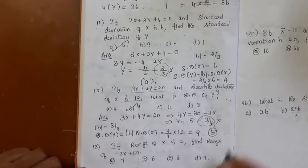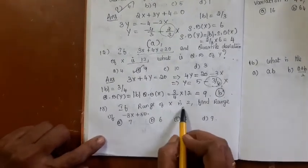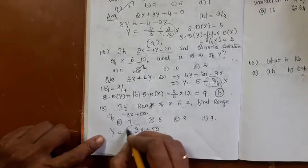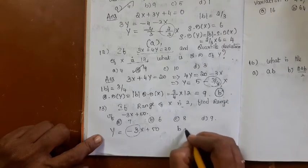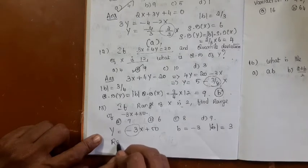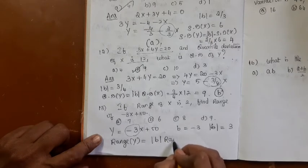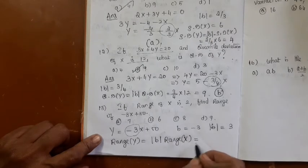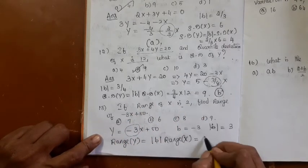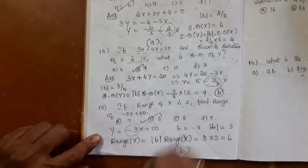If the range of x is 2, find the range of y = -3x + 50. The coefficient of x is -3, so |b| = 3. Range of y = |b| × range(x) = 3 × 2 = 6. The answer is option B.